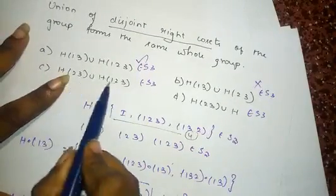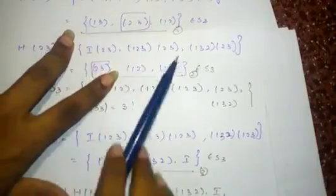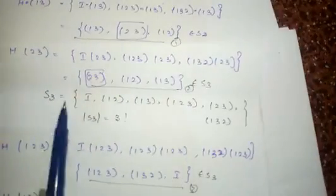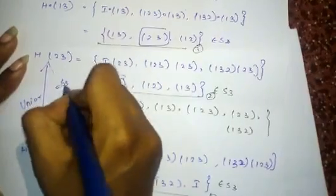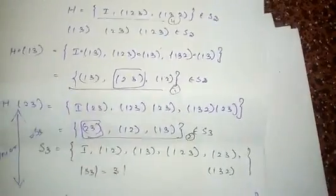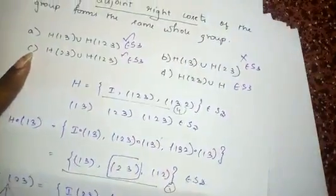Now consider H(2 3) and H(1 2 3). In H(2 3) and H(1 2 3) there is no common element — no (2 3), no (1 2), no (1 3), no (1 2 3), no (1 3 2), no I in common. So if we find the union of these two, we get S3. It belongs to S3.